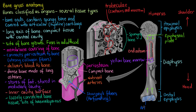Finally, the articular cartilage is found at both ends of the bone — on the top and the bottom — covering the surfaces where bones meet. And that's the gross anatomy of bones. I hope it was helpful, and I'll see you next time.